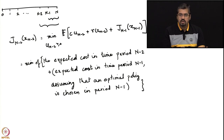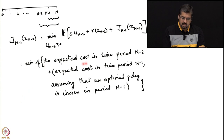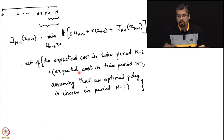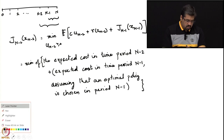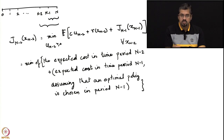That is verbally given by this particular sentence: it is the expected cost in time period n-2 plus the expected cost you would have assuming you are optimal from time period n-1 onwards. Now, one thing to note here is that this particular expression is to be computed for all x_{n-2}.